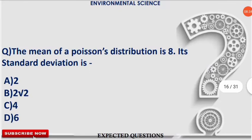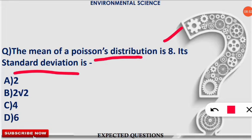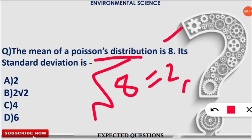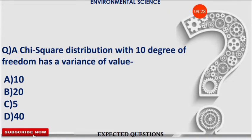The next question: the mean of a Poisson distribution is 8. What is its standard deviation? The formula is: standard deviation = √mean. So the standard deviation = √8 = 2√2. Option B is the correct answer. Even if you don't know what a Poisson distribution is, knowing this formula is sufficient to solve the question.